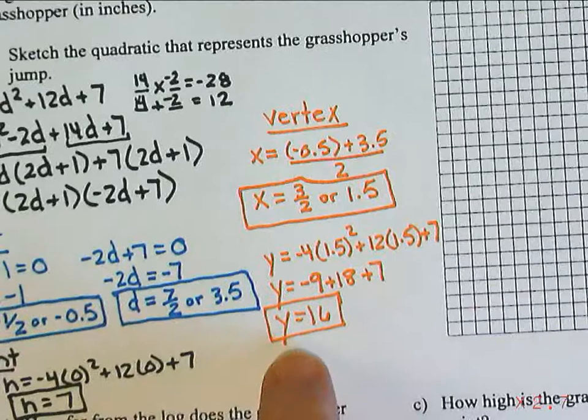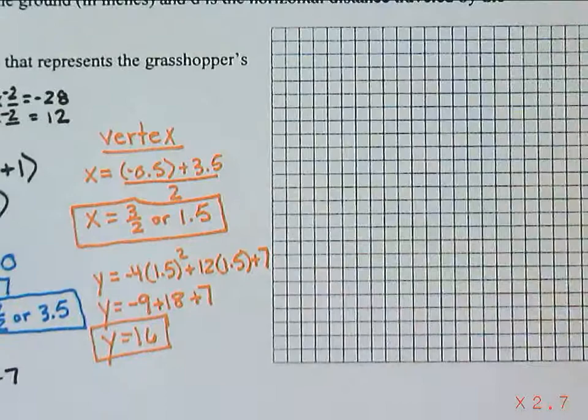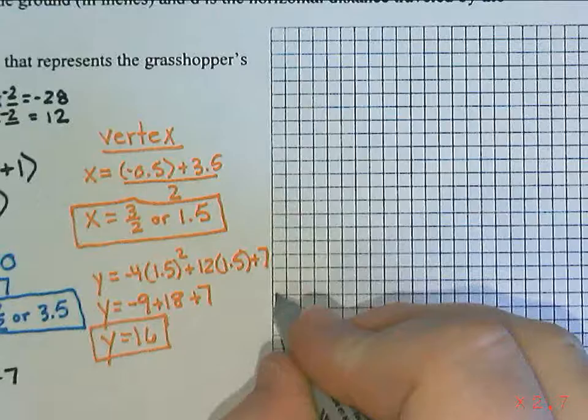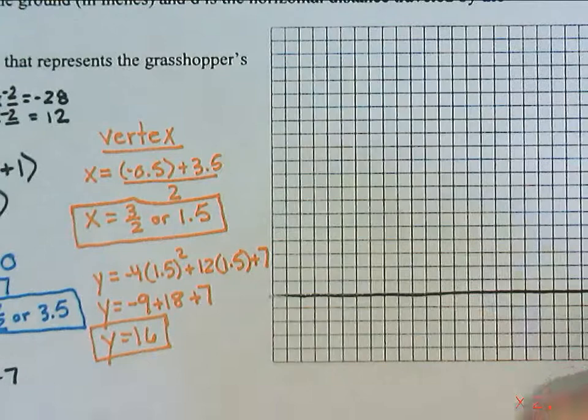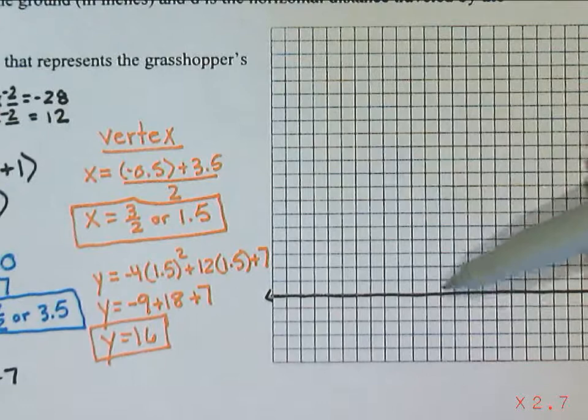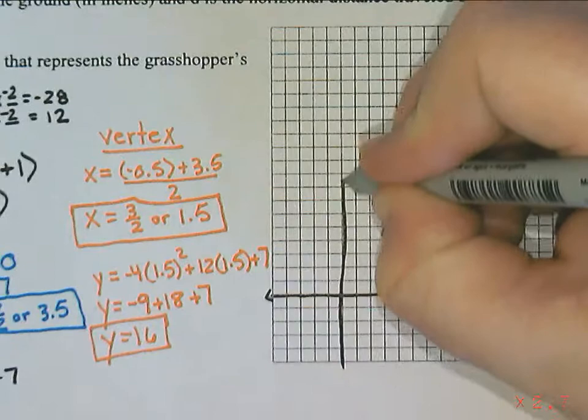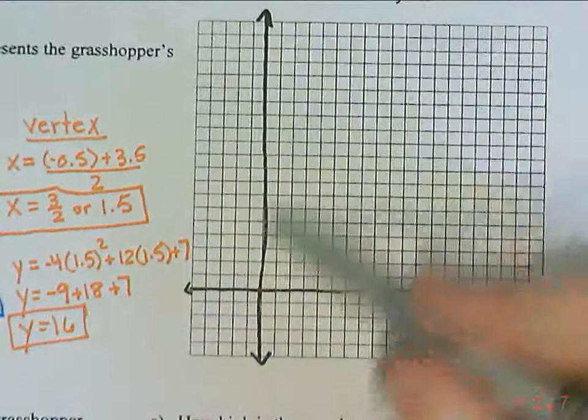So the vertex is going to be at 3 over 2 and 16 or 1.5 and 16. So when I go to do the graph, I know that I need to hit 16 on my y-axis, which means I really do need to leave enough space. When I counted out the grid, I found that there were 25 squares. So I think if I leave 4 empty squares at the bottom, that should still leave me enough room to get all the way up to 16. And then I do have a negative x-intercept of negative 0.5, so I am going to leave a little bit of space. But I'm going to put the x-axis a little closer on the left so that I have a little bit more room over here for my graph.